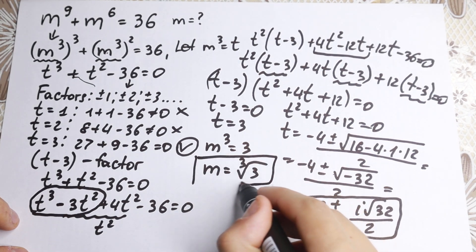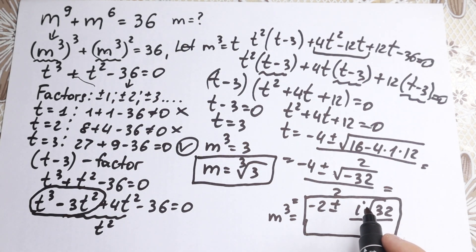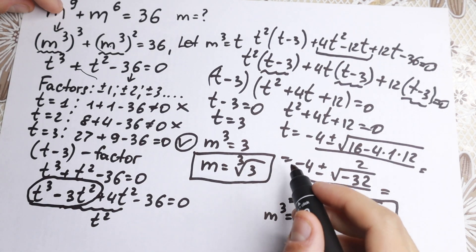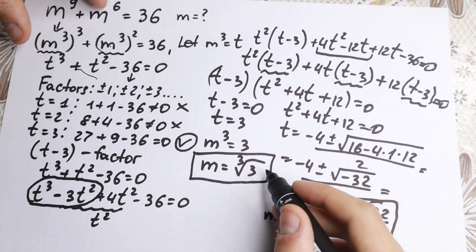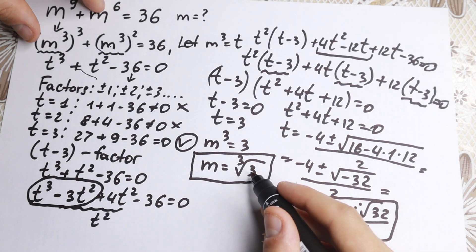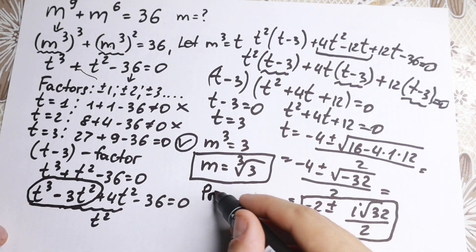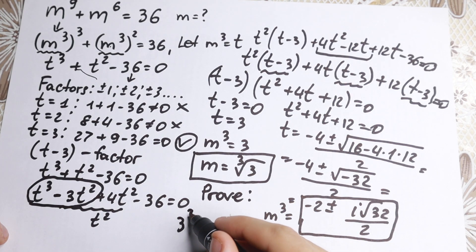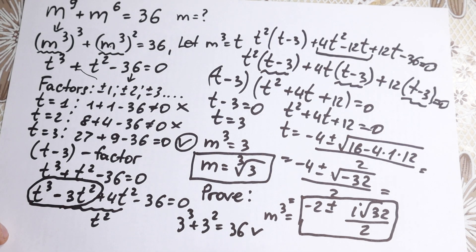Let's verify quickly. If m = ∛3, then m to the 9th is (∛3)⁹ = 3³ = 27, and m to the 6th is (∛3)⁶ = 3² = 9. So 27 + 9 = 36. This is absolutely correct.